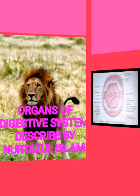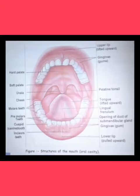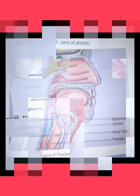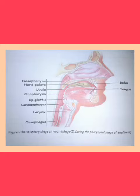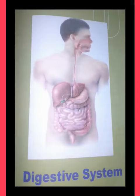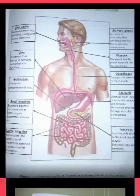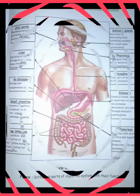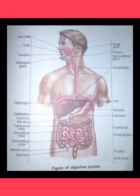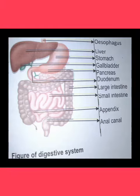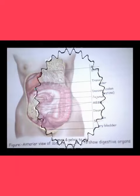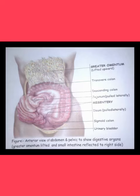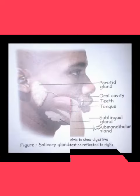The different parts or organs of the digestive system, described by Muhammad Nuttajil Islam. The digestive system has two major components: one, the gastrointestinal tract (GI) or the alimentary canal; and two, accessory digestive or GI organs.